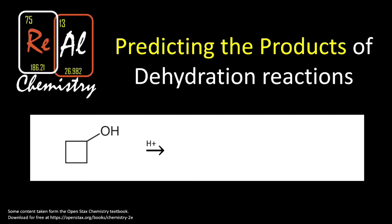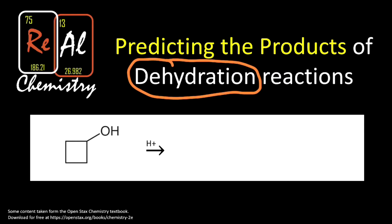Today we're going to be talking about predicting the products of a dehydration reaction. When you see the word dehydration you should think about taking the water out of something — when you're dehydrated you're short on water. We're going to talk about removing a water from an alcohol, which has an OH group, with hydrogens on the other carbons. We'll remove the OH and an H to make water.